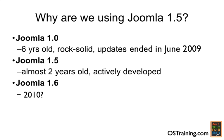We'll be using Joomla 1.5 as we go through this training program. Joomla 1.0 is six years old, rock solid, but updates ended last year. Joomla 1.5 is almost two years old and being actively developed, with many extensions for it. Joomla 1.6 is due out sometime in 2010 — there is an alpha version out there you can download and try. But at this time, no one really knows when it will be released or what the migration or upgrade path will require.